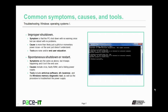There are other shutdown issues like spontaneous shutdown or restart. The symptoms are similar to improper shutdown, but it keeps happening and it isn't the end user. Causes can include malware, faulty RAM, and a failing power supply. Tools to troubleshoot this include antivirus software, system file checker with the scan now option, and the Windows memory diagnostic tool. If none of those work, follow the procedures for troubleshooting a power supply.